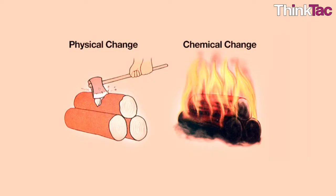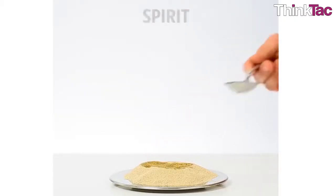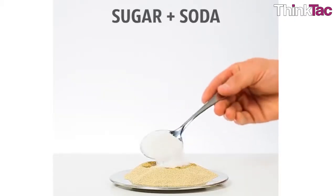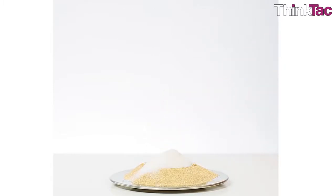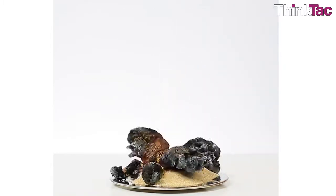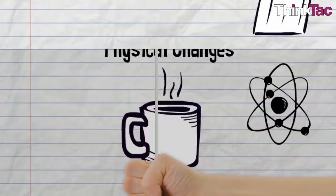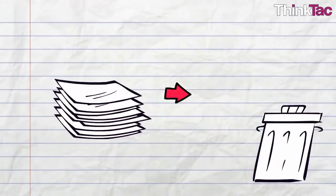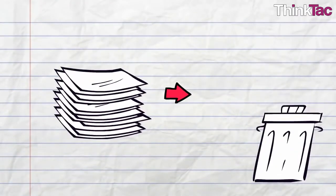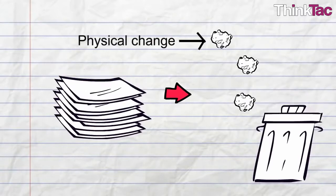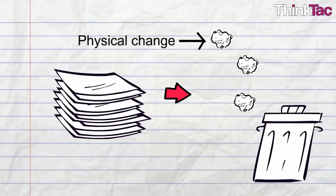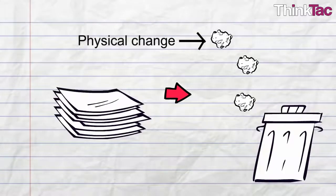A chemical change is different from a physical change in that a new chemical substance is formed by the combination or breakup of two chemical substances in the case of a chemical change. But in a physical change, the substance does not change its chemical composition — a physical change only involves a change in the substance's physical properties.